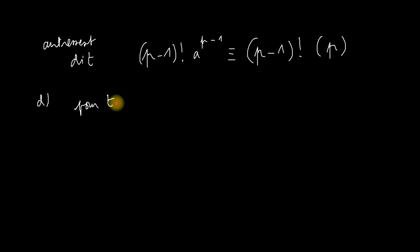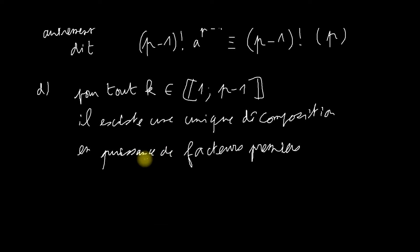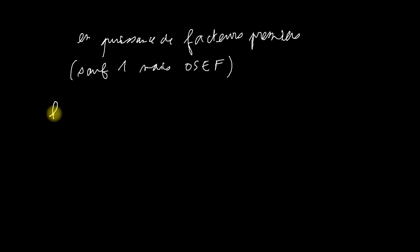Petit D. Pour tout K appartenant à 1 jusqu'à P moins 1, there exists a unique decomposition in facteurs premiers. Enfin, in puissance de facteurs premiers, pour être précis. Sauf 1. Mais 1, on s'en fiche, en fait. K. C'est donc égal. Attention, ça va être un peu chelou. Je vais essayer d'écrire la décomposition en facteurs premiers de n'importe quel K. Donc ça donne ça. Du coup, les diviseurs premiers de K, c'est PK1, PKn.